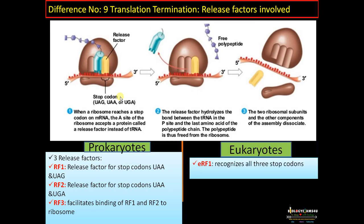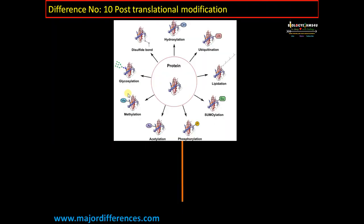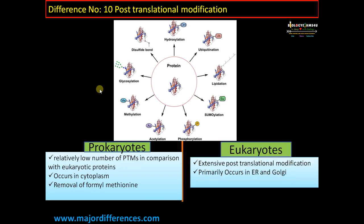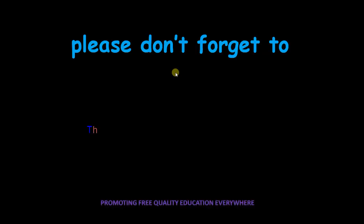In eukaryotes, there is only one release factor that can recognize all three stop codons. Difference number ten: post-translational modification. In prokaryotes, there is a relatively low level of post-translational modification; it occurs in the cytoplasm and the first amino acid, formyl-methionine, is removed. In eukaryotes, there is extensive post-translational modification carried out by membrane-bound organelles such as the endoplasmic reticulum (site of glycosylation and disulfide bond formation) and the Golgi apparatus. Thank you for your attention — you are with biologyexams4u.com.